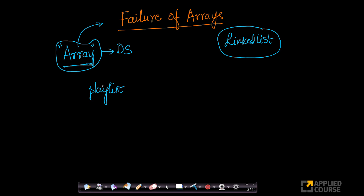Now I have a playlist of size 10. Let us see how arrays fail using the example of a playlist. Let us say I have an integer array — let us take C syntax for simplicity. But the same thing happens in almost all major programming languages. I will simply explain it using C because that is easier.